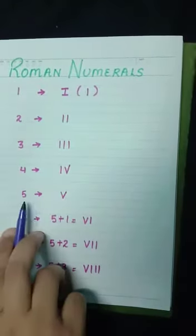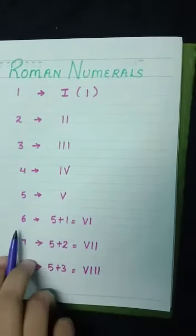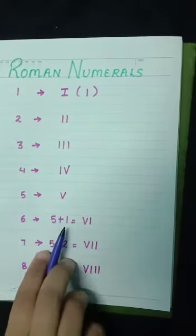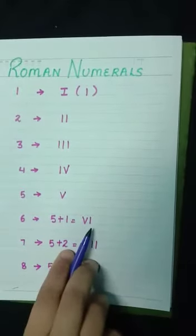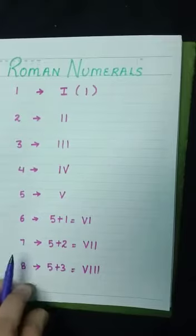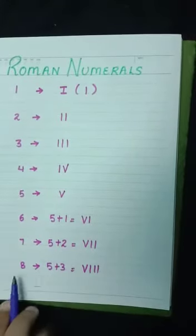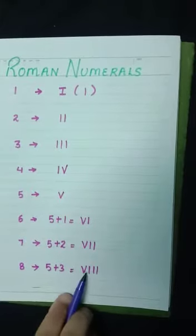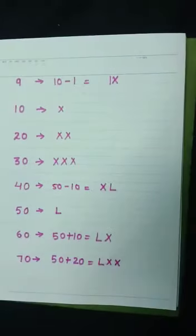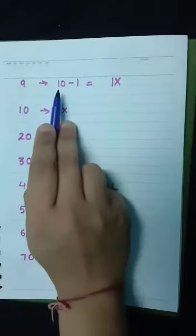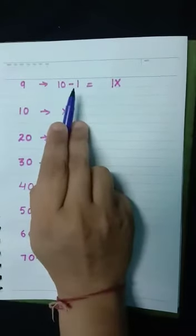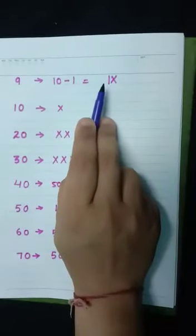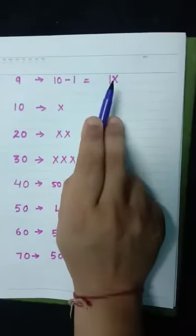5 का symbol V है। 6 means 5 plus 1, तो VI। 7 means 5 plus 2, तो VII। 8 means 5 plus 3, तो VIII। 9 means 10 minus 1 — 10 का symbol X है, तो X में से 1 को minus करें — IX। That is 9।